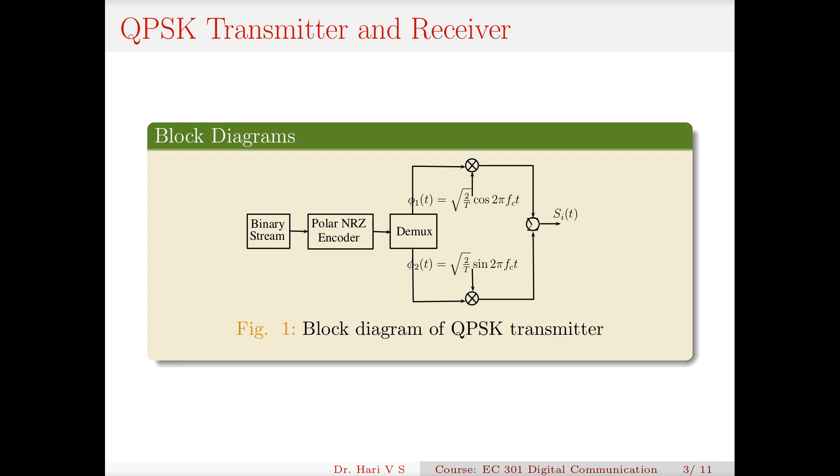If you see the transmitter, the block diagram looks like this. First I have a random binary stream that contains 0s and 1s. Then there is a block that is a polar non-return to zero, and there is nothing fanciful about that - only the logic 0 is mapped into a minus 1 and the logic 1 is mapped onto a plus 1. So that binary stream times 2 minus 1 will make it a polar non-return to zero stream.